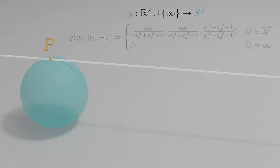Similar to f, we can also make g a piecewise function and say that g of q is n when q is the point at infinity. g then defines a map from the extended plane back to the entire sphere.